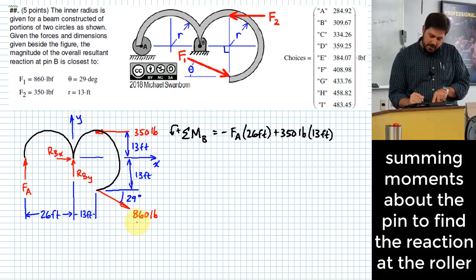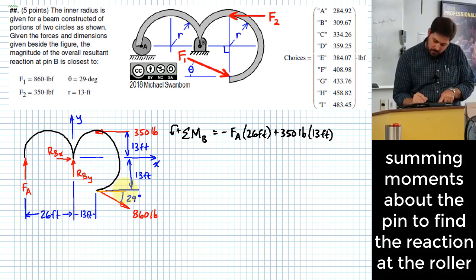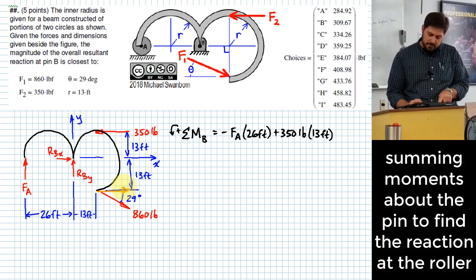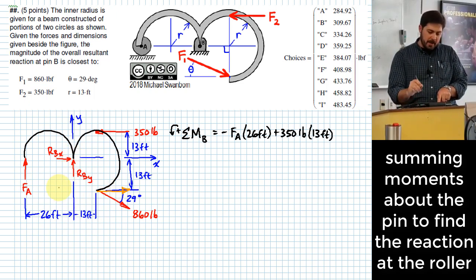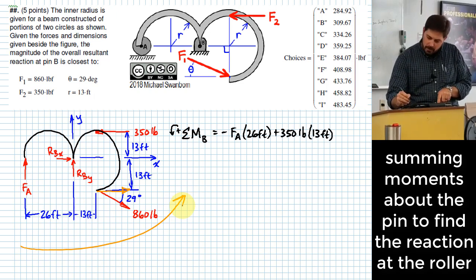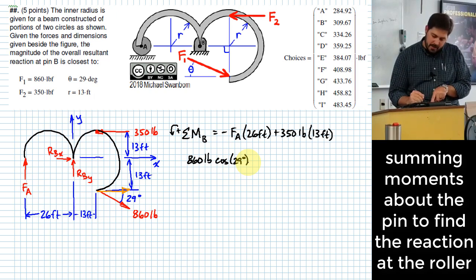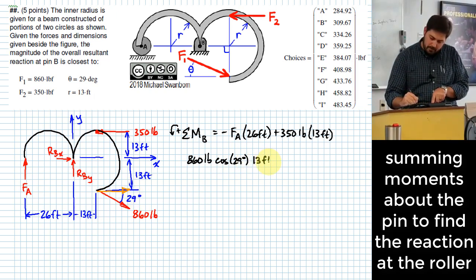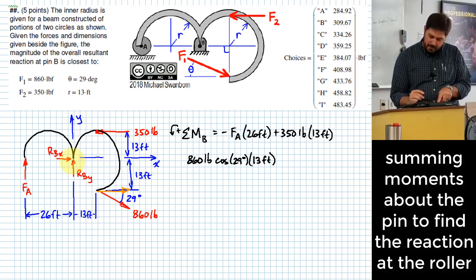Then I have to deal with this 860, which means I've got to break it into components. Let's deal with the horizontal component first. So the horizontal component would act right here. What direction does that tend to rotate the body? Counterclockwise, right? To the right at a location below would tend to try to make this thing rotate counterclockwise. So I would take that 860 pounds, multiply by the cosine of 29 degrees to get the horizontal component, and then multiply that by 13 feet, which is the vertical length from that line of action to the point B.